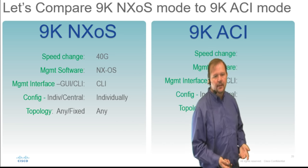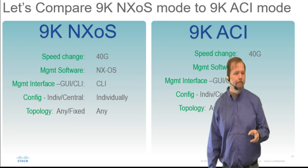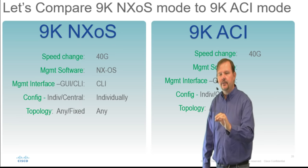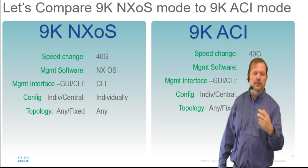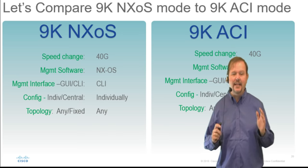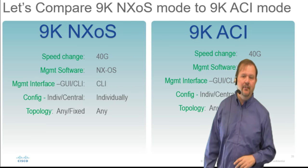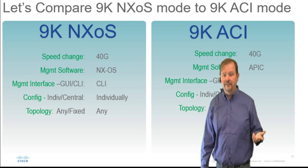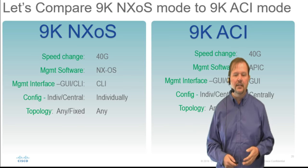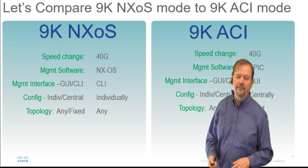Now let's compare that to ACI mode. I still have the same speed change going on. But what is my management software? The APIC — the Application Policy Infrastructure Controller. The APIC looks basically like a C-series server with some special software. When we manage the APIC, we typically do it via a GUI. And now instead of individually configured boxes, we have central configuration. And topology-wise, we have a fixed topology.